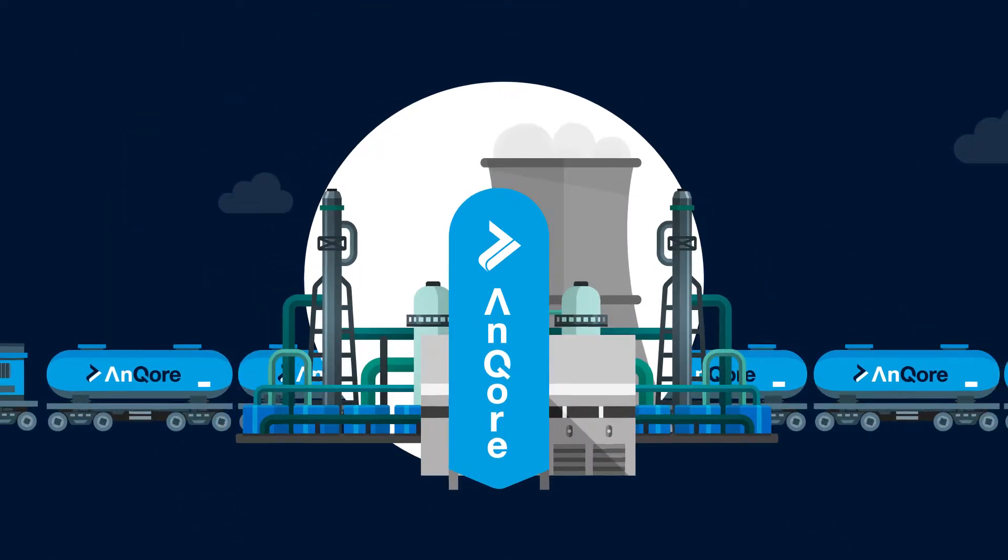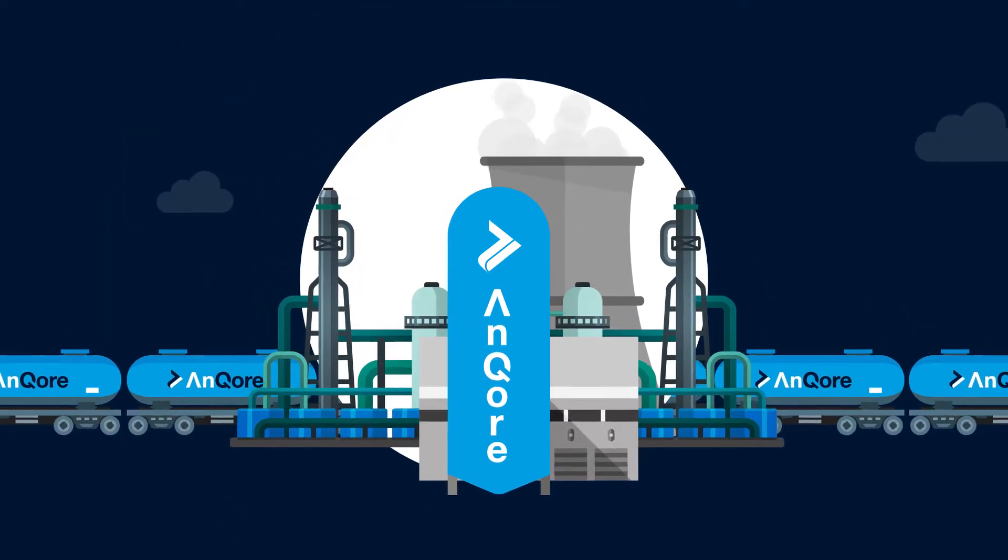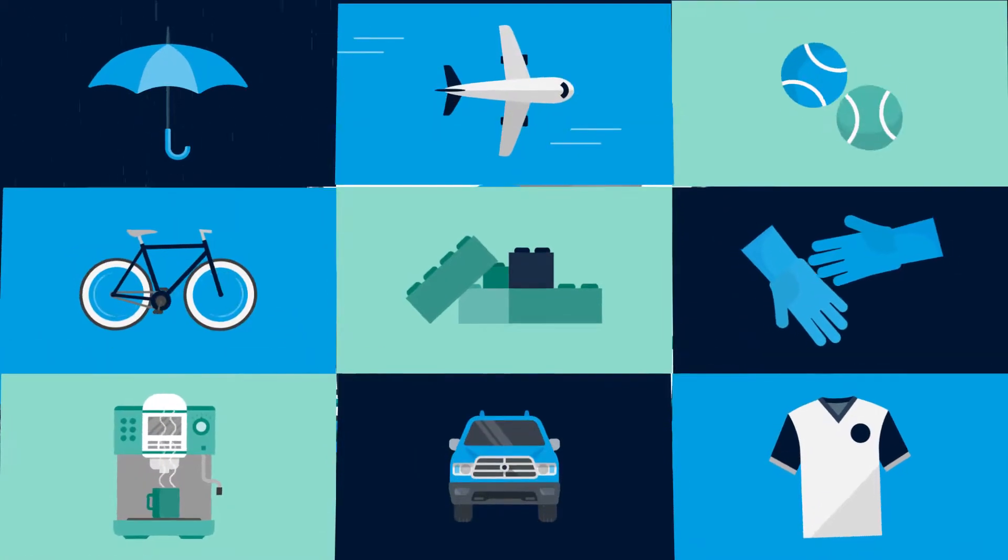Angkor is a key producer of acrylonitrile, a raw material used in the manufacture of many kinds of products.